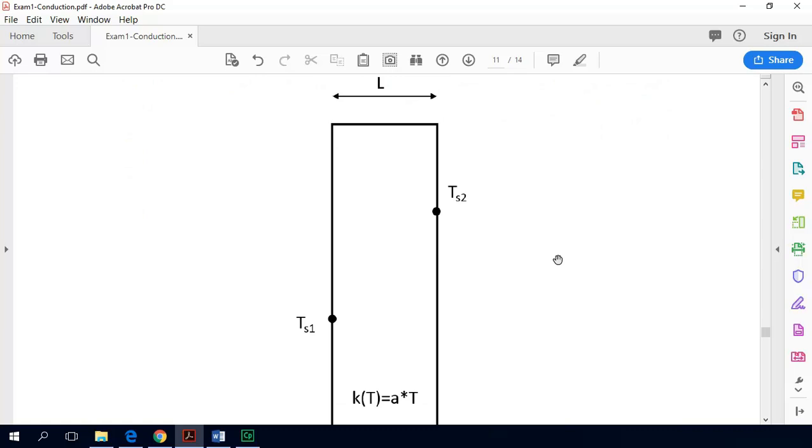So the first step would be to write down the form of the heat equation. So it's a steady state problem, which means we don't have an accumulation term. We don't have a generation term and we do not have a dtdx, sorry, we do not have a dtdy or a dtdz terms, we just have the dtdx term. And that looks like this.